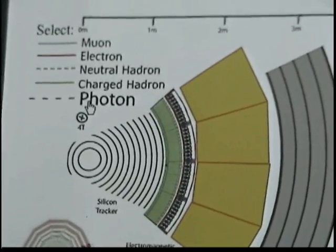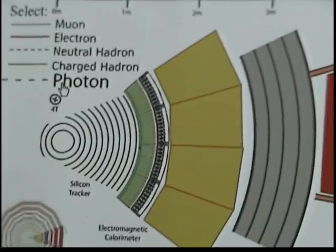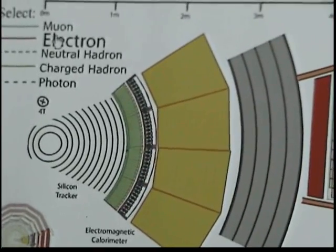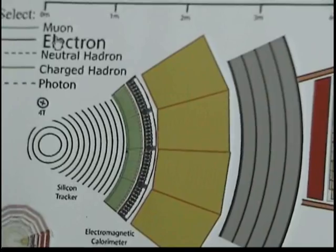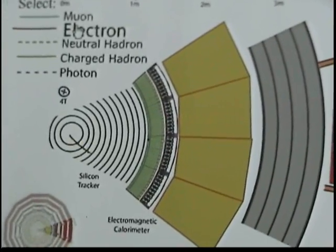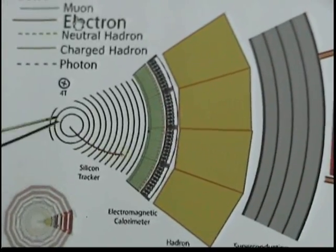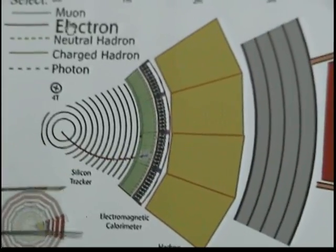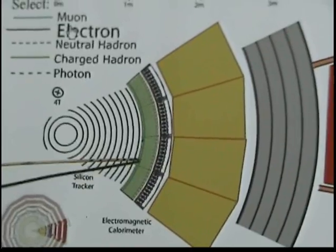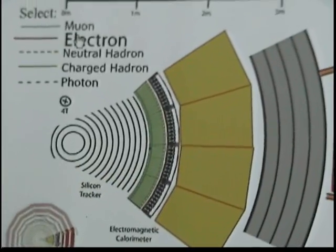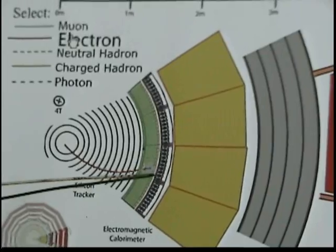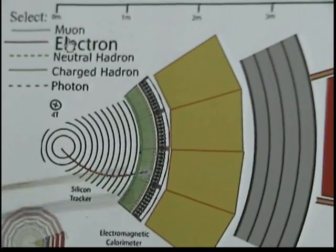Electron. What's the signature of an electron? A track after the tracker and then a shower. Perfect. So it needs a track, and because it's in a magnetic field, the curvature gives you the momentum — a curved track with an electromagnetic shower.